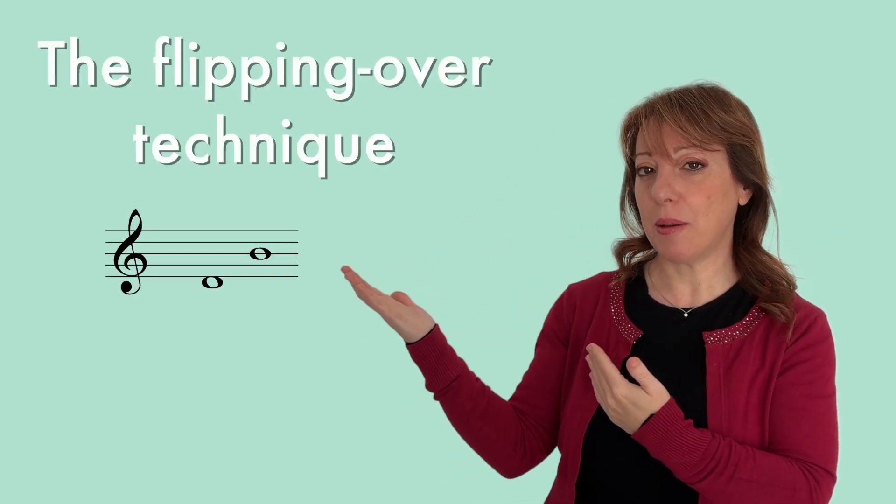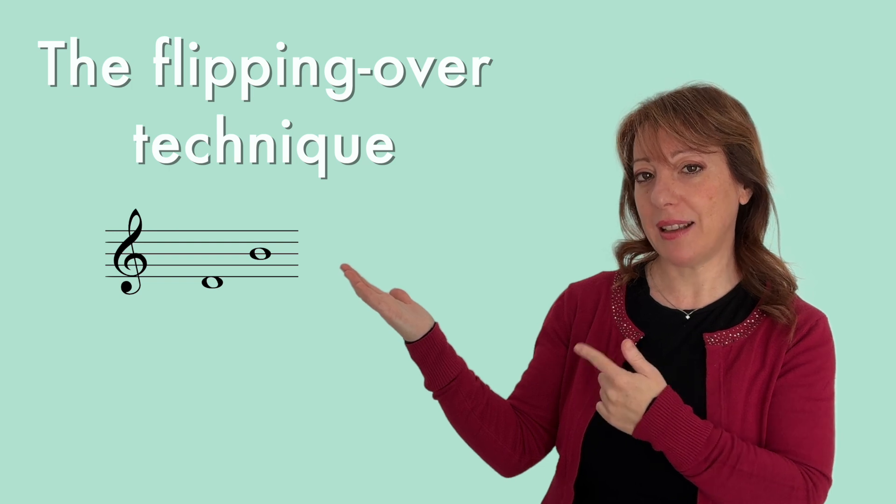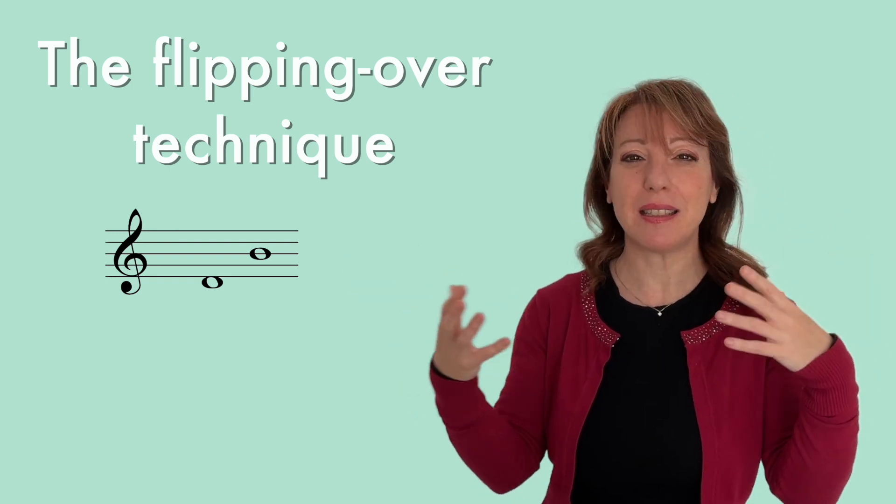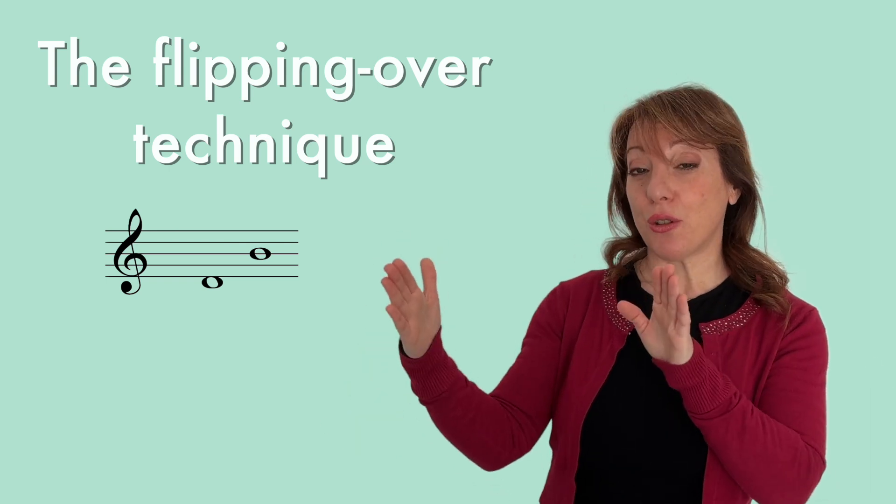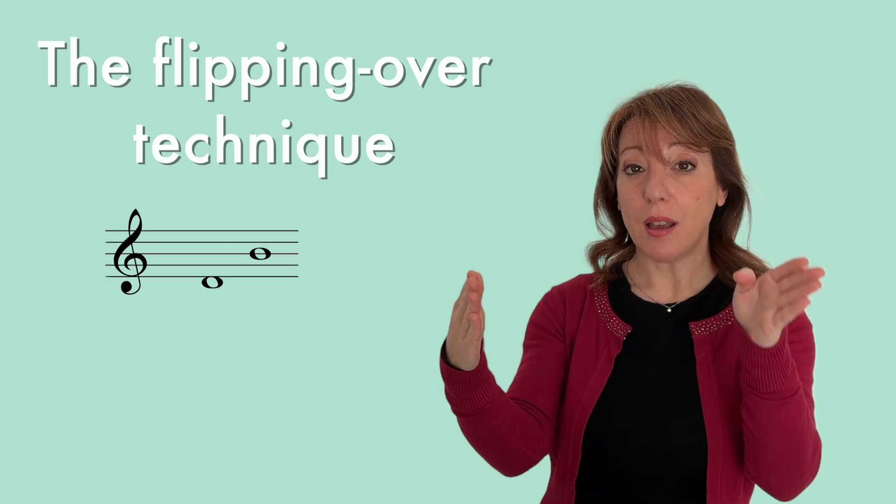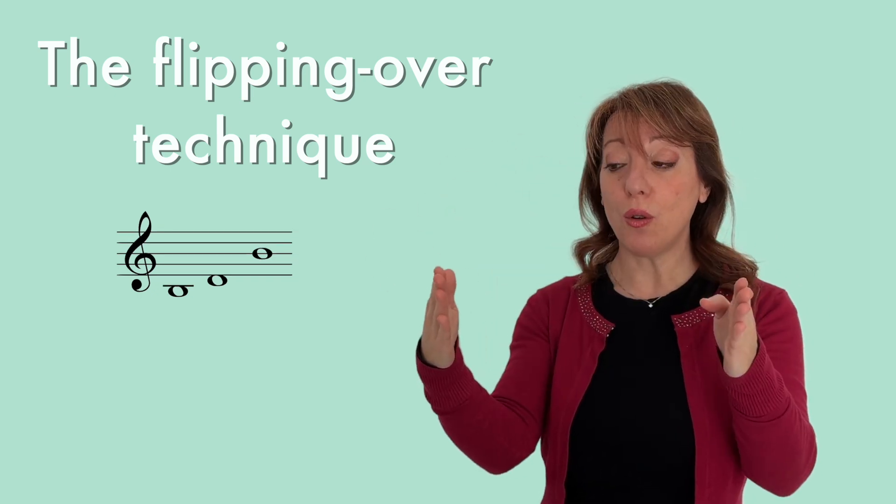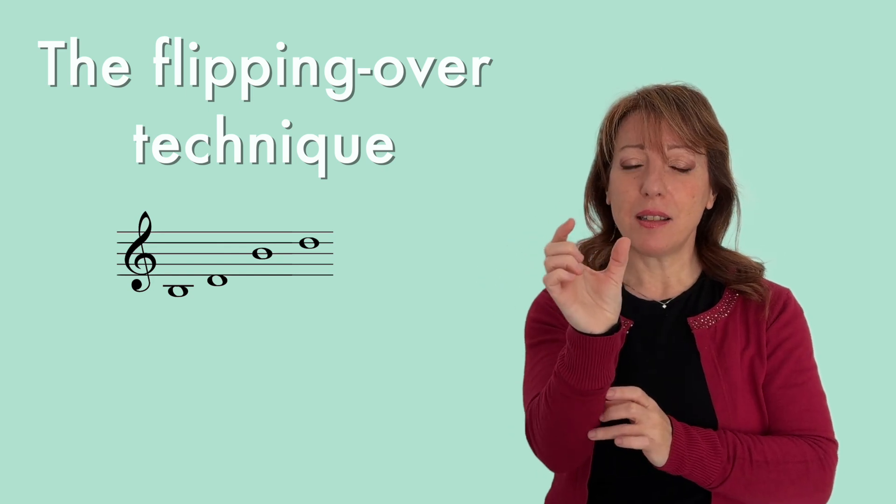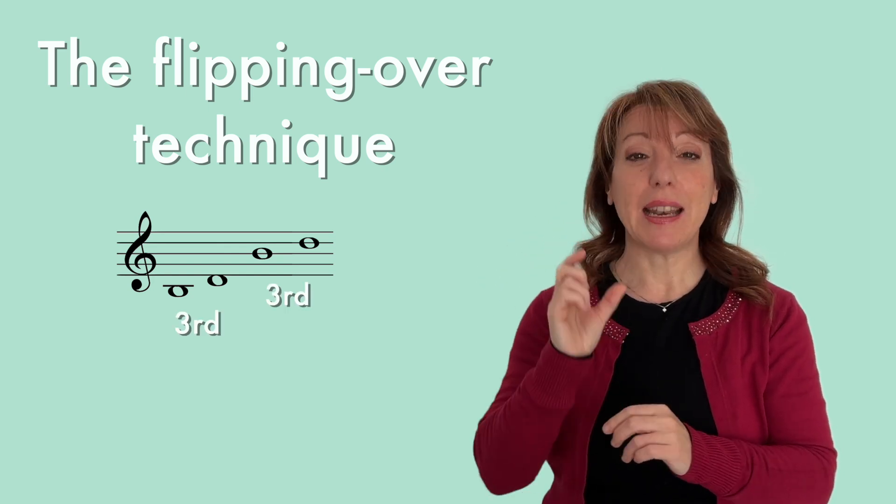You need to flip over the interval to reverse it. So for example, instead of D-B, it's an interval of a sixth. But what type? Is it major, minor, augmented, diminished? What is it? So we reverse the interval. For example, B, we put it down an octave or we raise up D an octave higher. And we find an interval of a third.